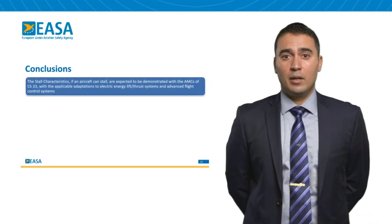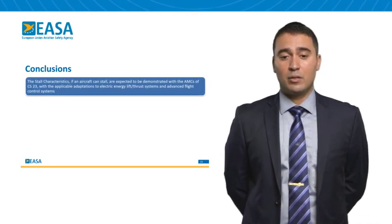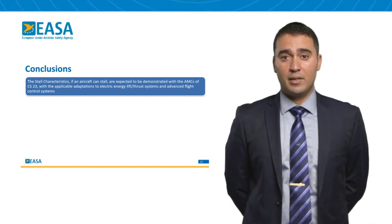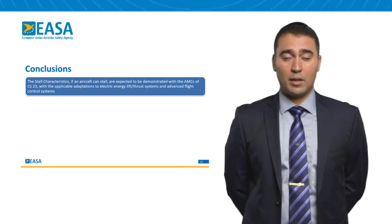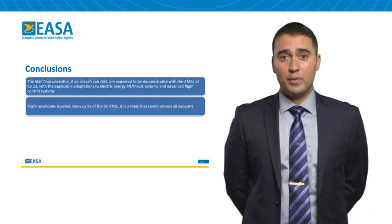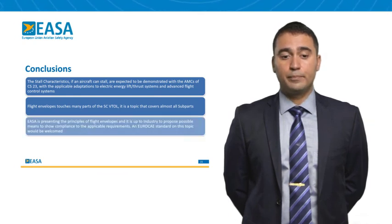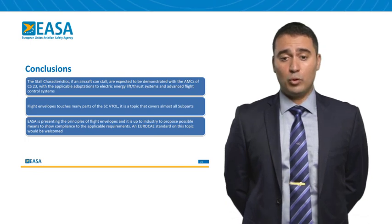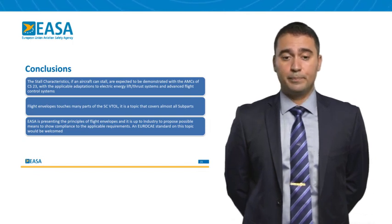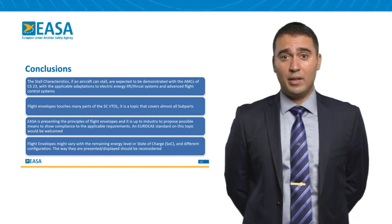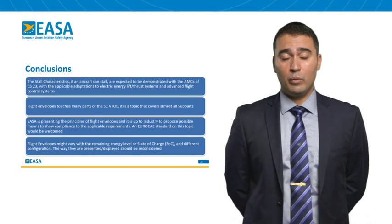In conclusion: if an aircraft can stall, stall characteristics are expected to be demonstrated in the same way as in CS23 — determining the minimum stall speed according to 2110 and the stall characteristics according to 2150. Flight envelopes touch many parts of the special condition VTOL and cover almost all subparts. EASA is presenting only the principles of flight envelopes, which is understood to be a novel concept, and it is up to industry to propose possible means of compliance to the applicable requirements. Flight envelopes may vary with the remaining energy level, state of charge, and different configurations, so we would probably also need to reconsider the way they are displayed to the crew.